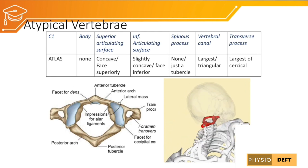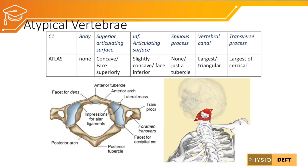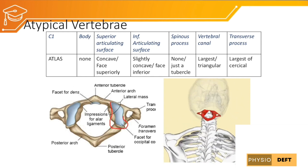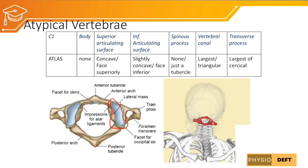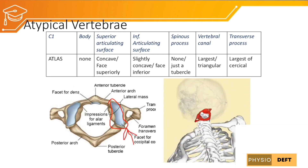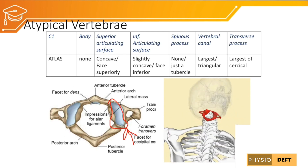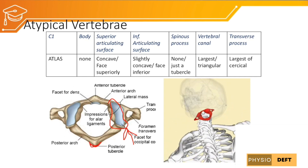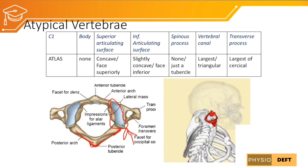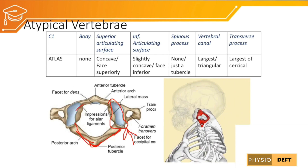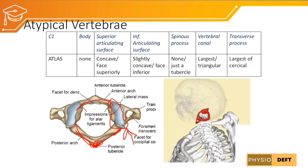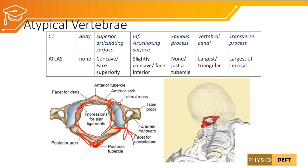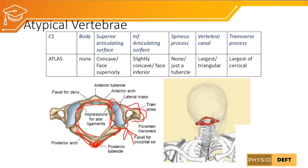The first atypical vertebra is C1, the atlas. The atlas has no body. The superior articulating facet is concave and faces superiorly. The inferior articulating facet is slightly concave and faces inferiorly. The atlas does not have a spinous process; it has only a small posterior tubercle that continues as the posterior arch of the atlas. It has both a posterior arch and an anterior arch. The vertebral canal is large and triangular, and the atlas has the largest transverse process of all cervical vertebrae.